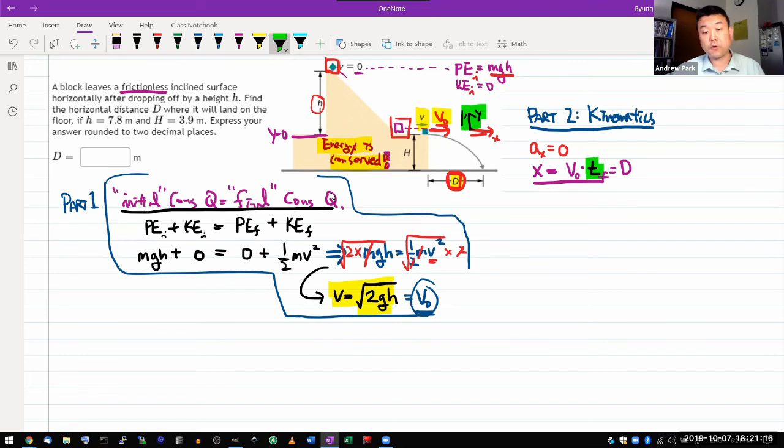In the vertical direction, I have the y acceleration of minus g, but the initial y velocity of zero. So that will make some things a little bit easier. So I can write down my kinematics formula.